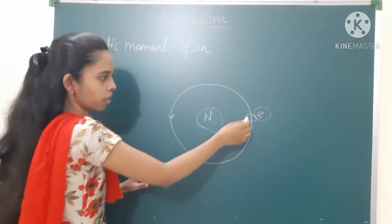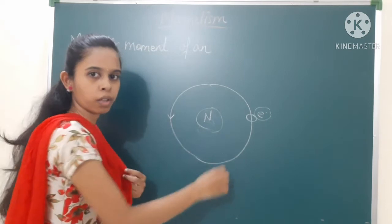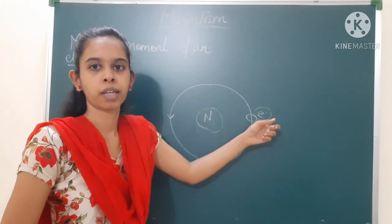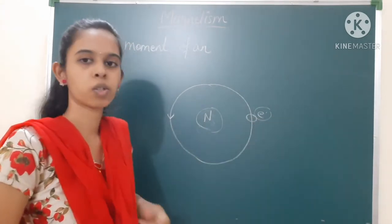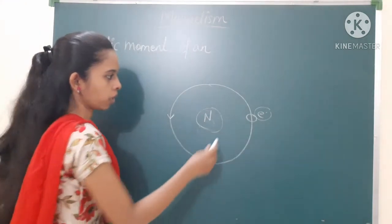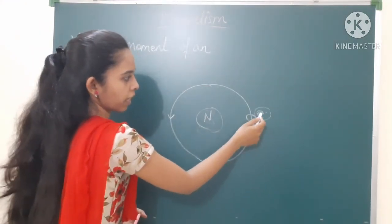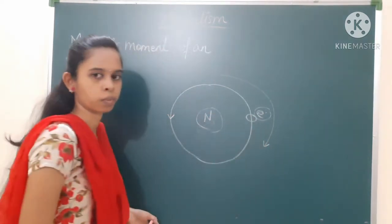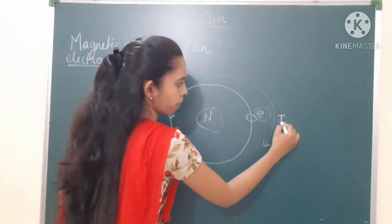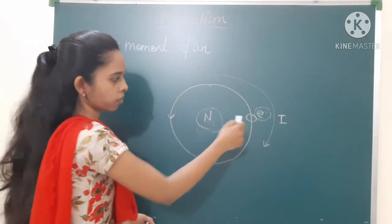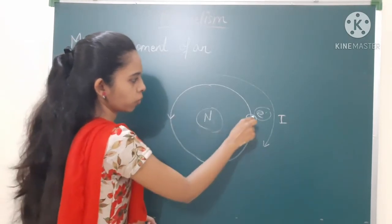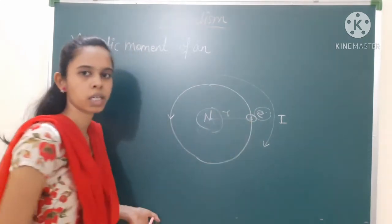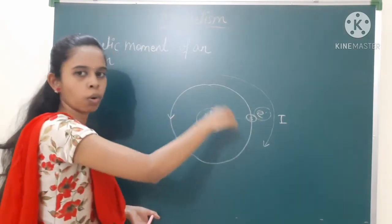Let us say this is the direction of electron movement. Now, as studied in current electricity, whenever there is a flow of electrons there is always a generation of current. So whenever the electron moves in an anticlockwise direction, the current is formed in the opposite direction. The distance from the center to the electron is the radius of the orbit.